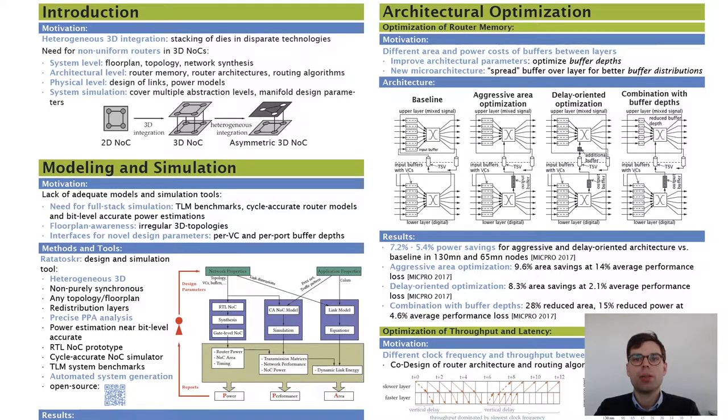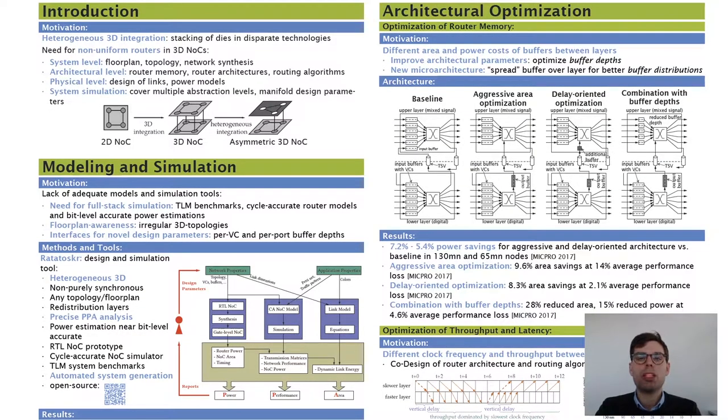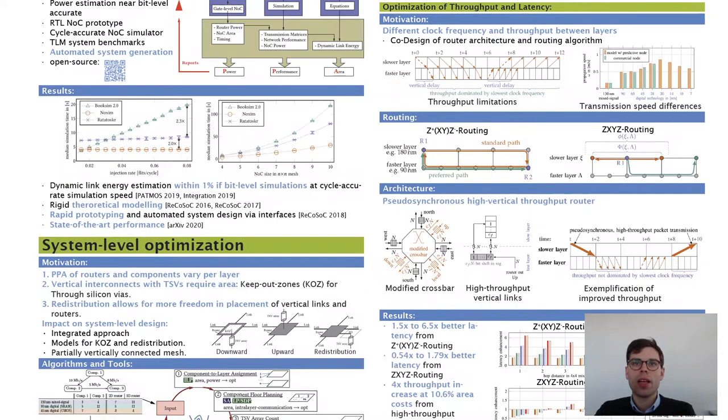...you can see that the baseline routers are conventional input buffered routers, while the aggressive area-optimized router puts one input buffer from the more expensive layer into the cheaper layer as an output buffer. By this, we were able to achieve area reductions of up to 28%, power reductions of up to 15% at an average performance loss of less than 4.6%.